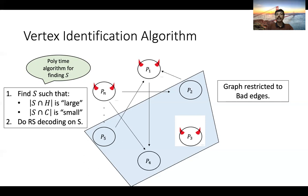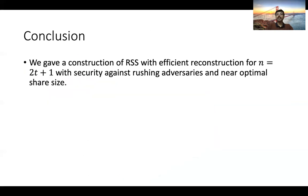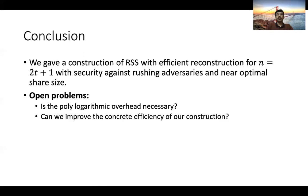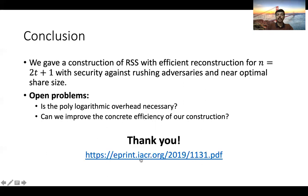Unfortunately I won't have time to go into the details of the vertex identification algorithm — I encourage you to look at our paper. In this work, we gave a construction of robust secret sharing with an efficient reconstruction procedure for N = 2T + 1, with security against rushing adversaries and near-optimal share size. Open problems include: whether the polylogarithmic overhead in the share size over lambda is necessary, and how to improve the concrete efficiency of the construction. Thank you for your attention, and you can find the full version of our paper on ePrint.